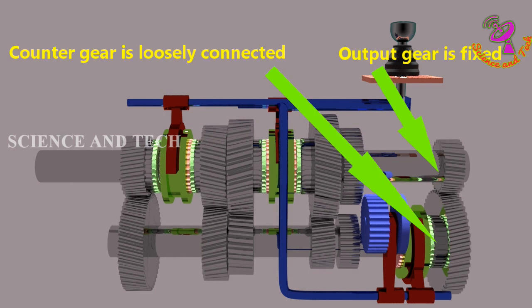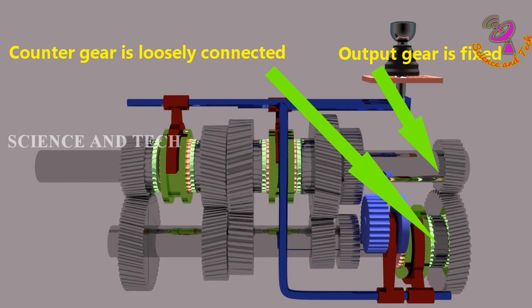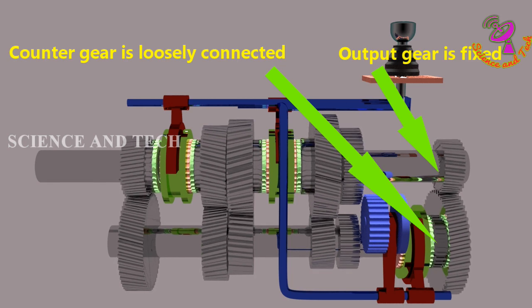In fifth gear, output shaft gear is fixed with shaft and counter shaft gear is connected loosely, because here reverse gear comes.